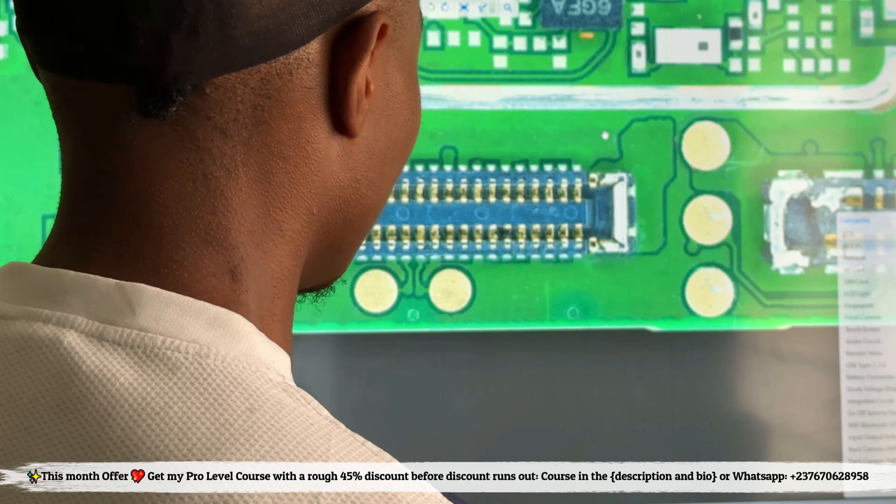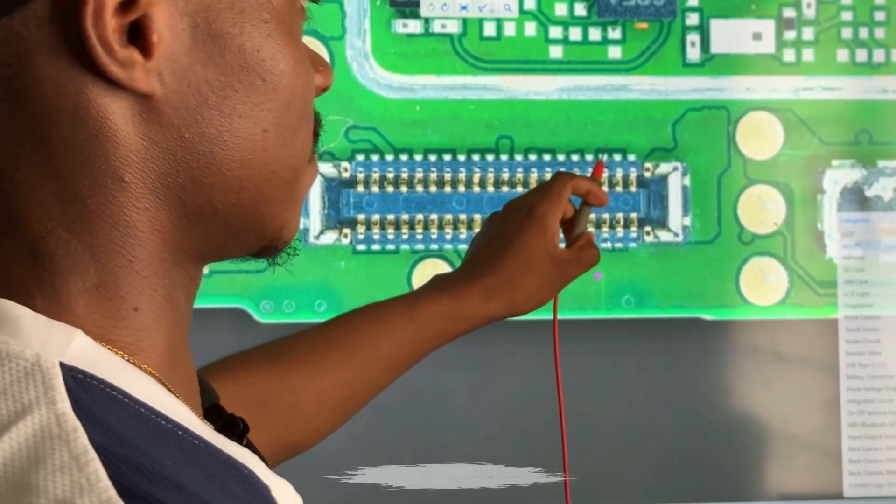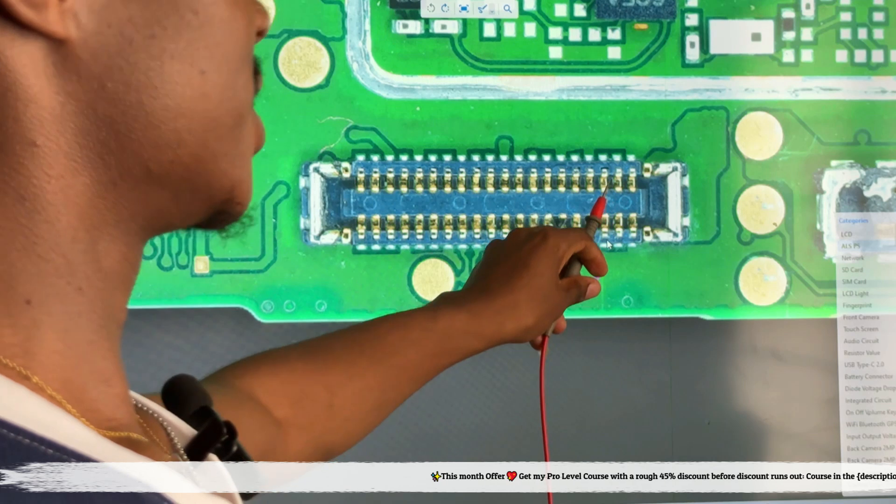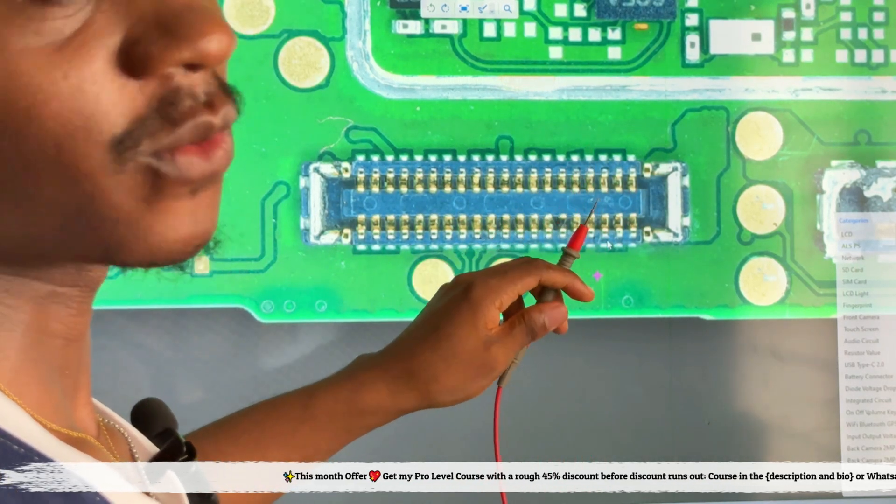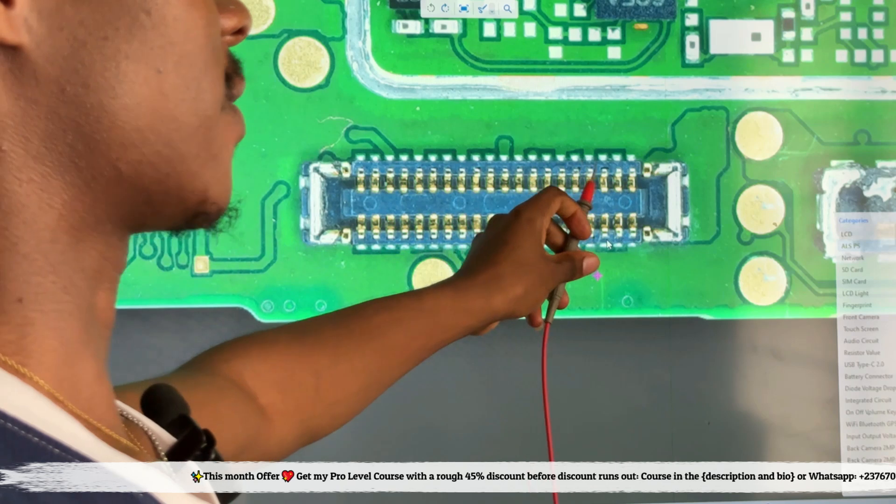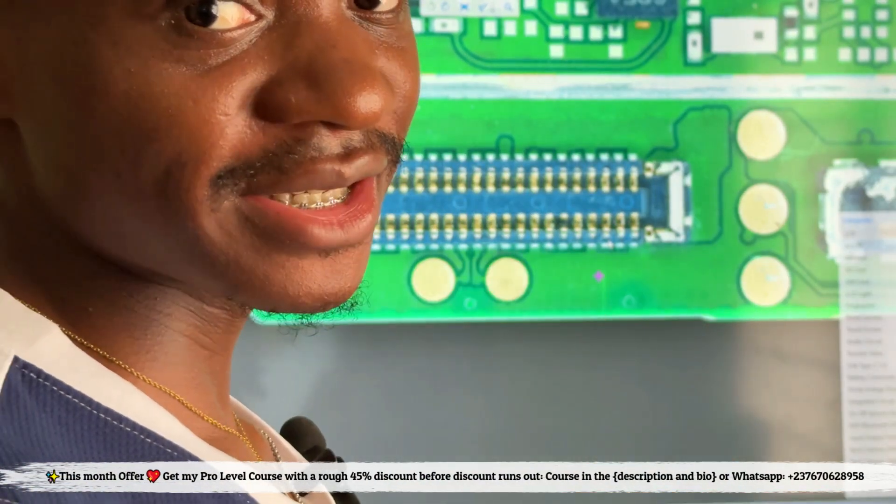You can see a lot of things but you cannot see the track that they are connected to. In this area you will need schematic diagram, you will need a PCB guideline that will easily show you where these lines are connected to. Though you won't see all the lines, with a schematic diagram and a bitmap you will easily know where all these pins are connected to.